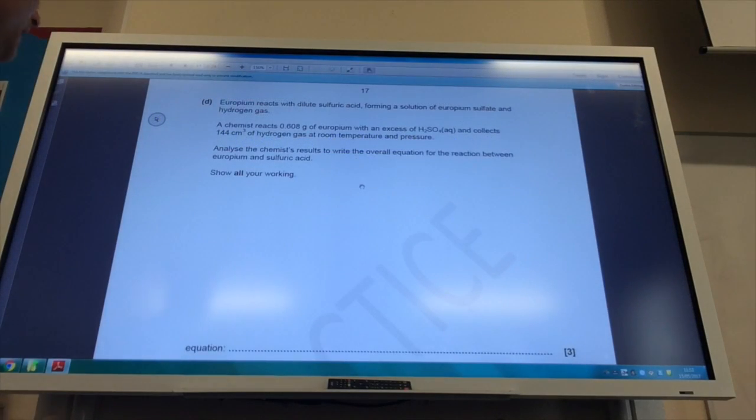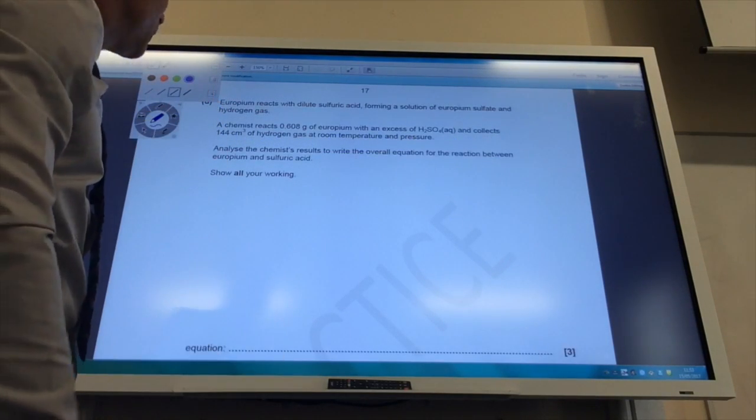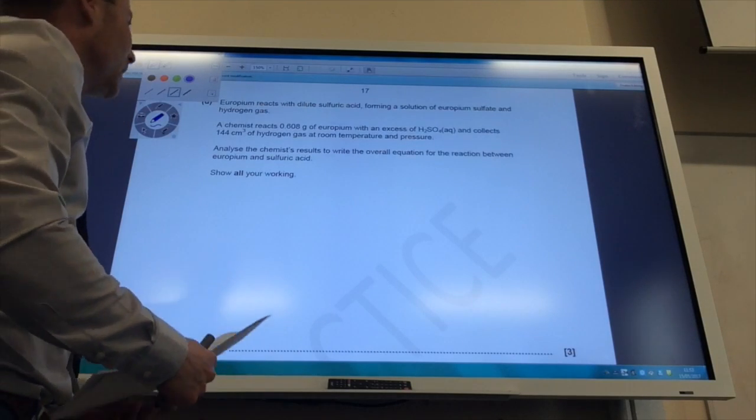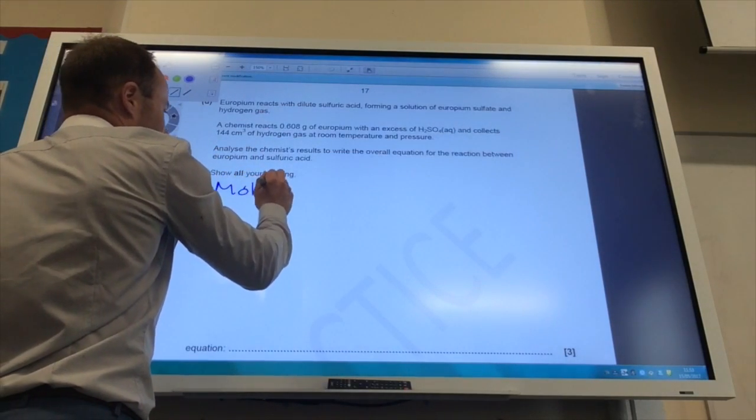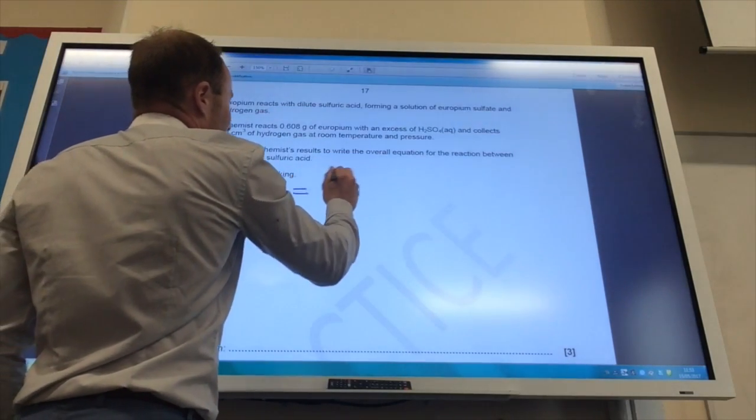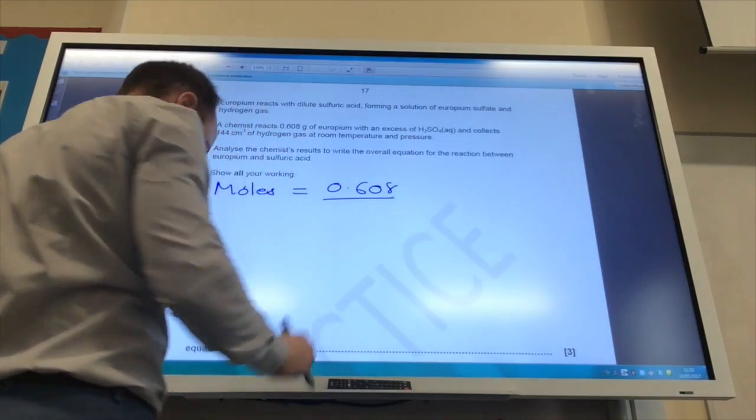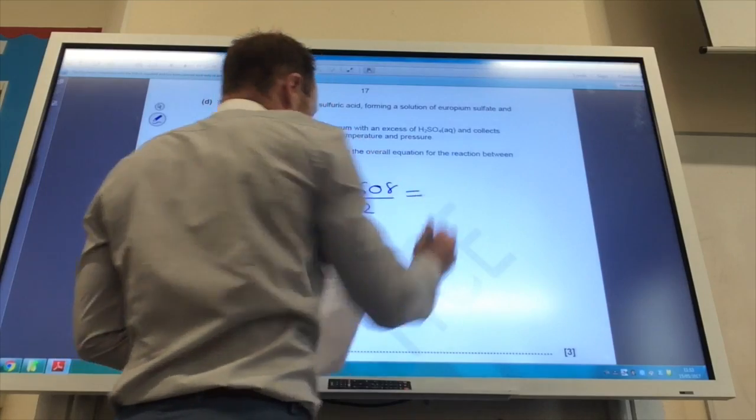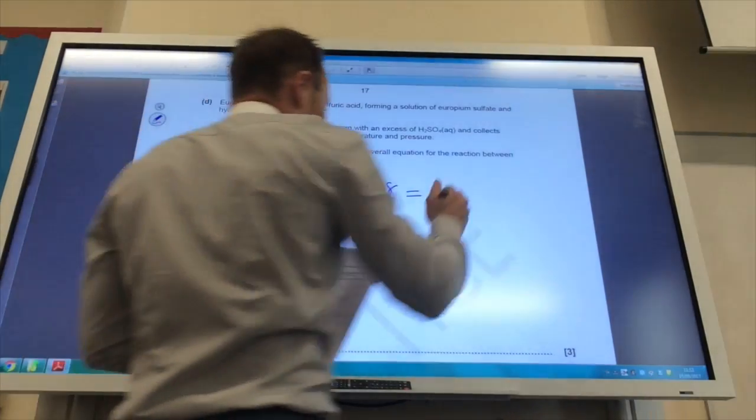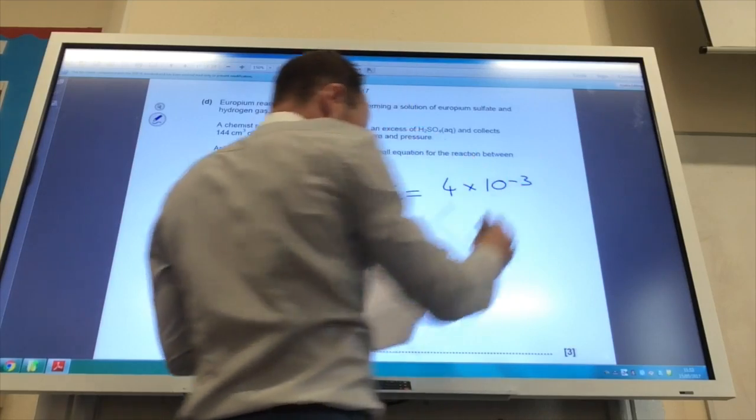Okay, so this one may freak you out, but even if you're not sure what you need to do, just work out the number of moles of each one. So I've got a mass of europium, so I'm going to find out the moles of europium, which you've just done a similar thing in the last example. So it's mass divided by the molar mass, which is 4 times 10 to the minus 3.